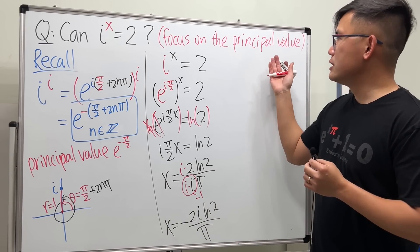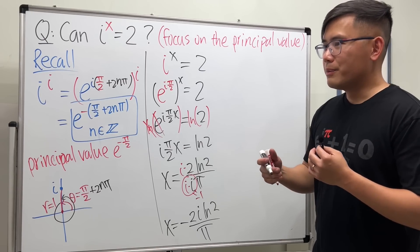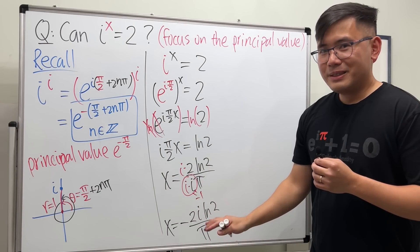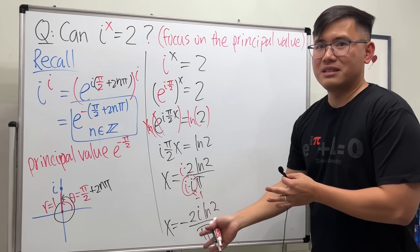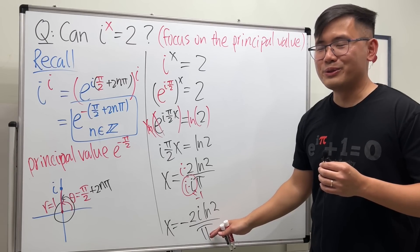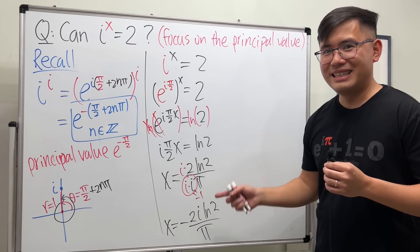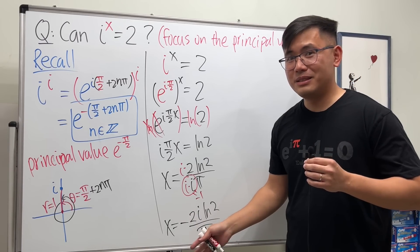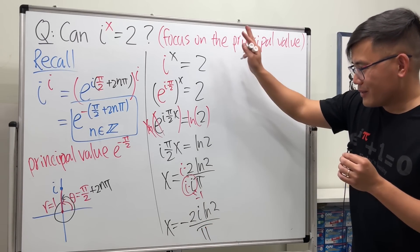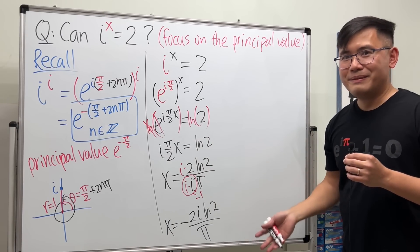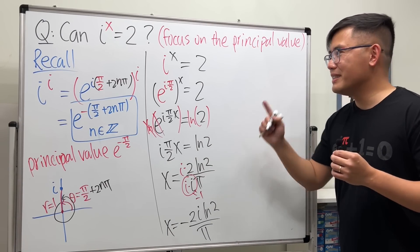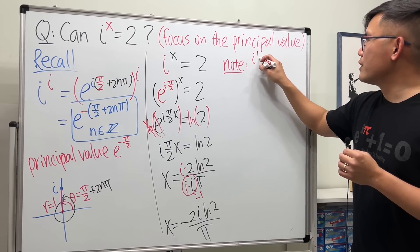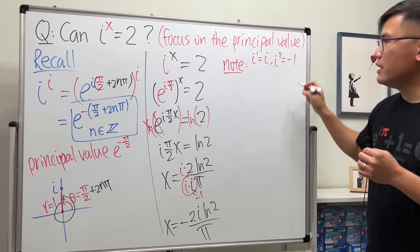However, even though I said this is the principal value—I mean just the principal value of the complex expression i to this power—this is not the only solution. And that's the mistake that I had last time for the 1 to the x power. You can see, nothing wrong with all this, but this is just not enough. Check this out.